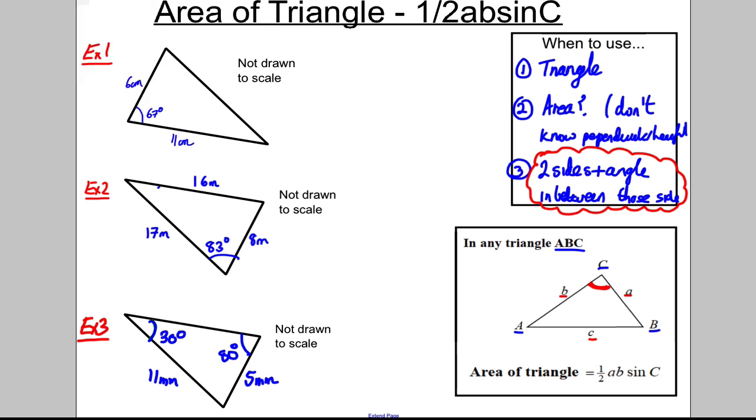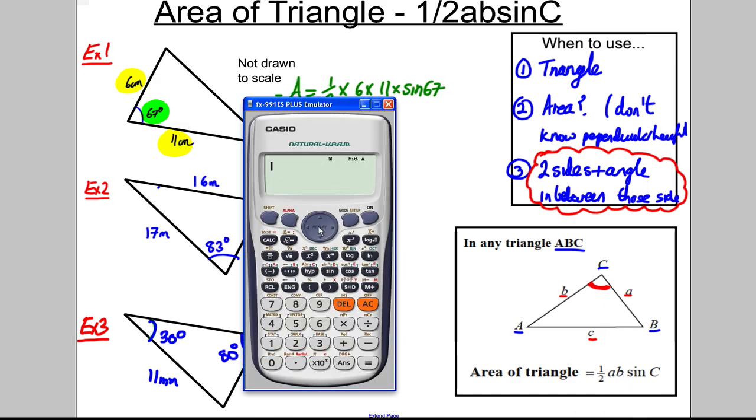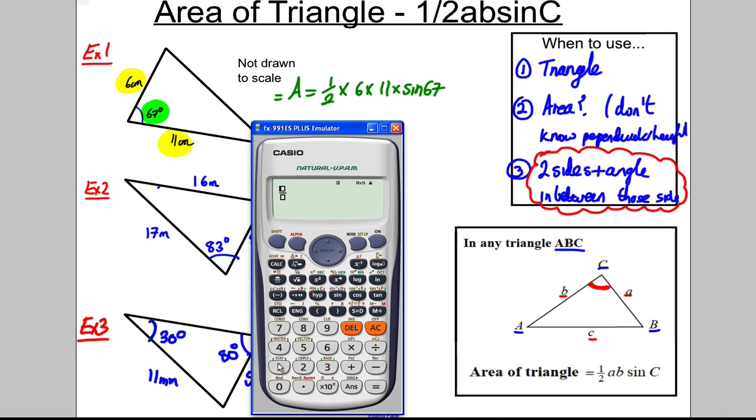Here are the two sides you know: 6 centimeters and 11 centimeters, and you know the angle 67. To work out the area, you just use a half times the two lengths times sine of the angle. So in this case, the area is a half multiplied by 6 multiplied by 11 multiplied by sine 67.